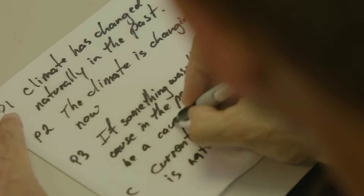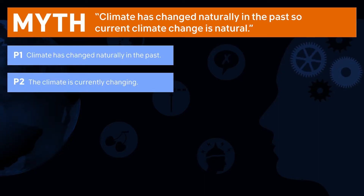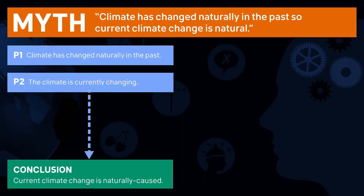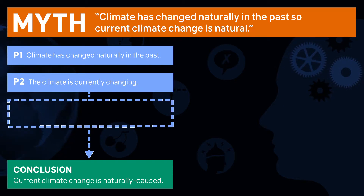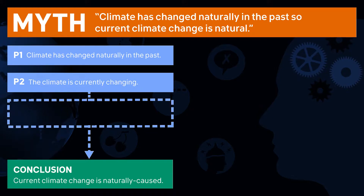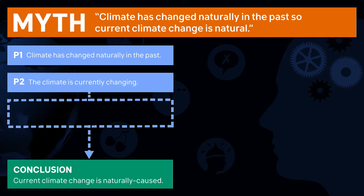If your argument is invalid you're not done yet with step two. Before you can go to the third step you have to make the argument logically valid. If an argument's logically invalid it's often because there's a hidden assumption — a hidden premise. In this case: 'if something wasn't a cause in the past it can't be a cause now.' Adding this premise makes the argument logically valid. When there's a hidden premise, this is often the heart of where an argument goes wrong.